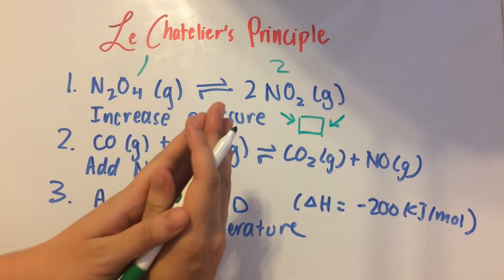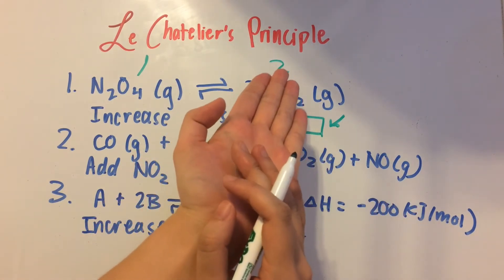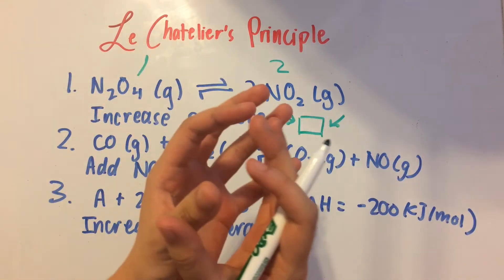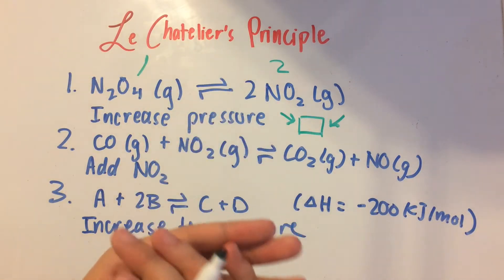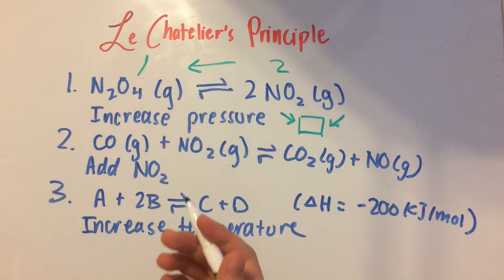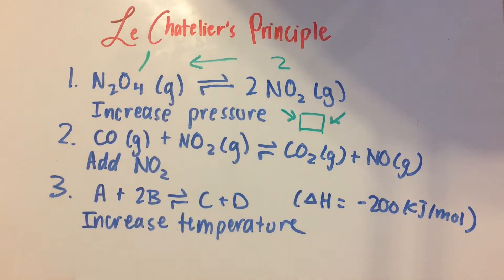So what's going to happen is we're going to shift from the side with more moles of gas to less moles of gas, because that takes up less space and that's more favorable in a container that's more compact. So this system is going to shift to the left and produce more reactants.